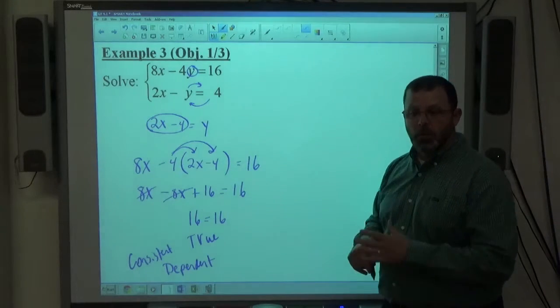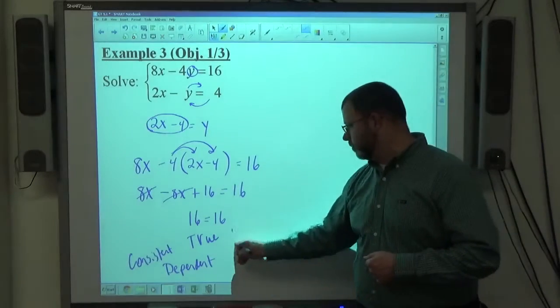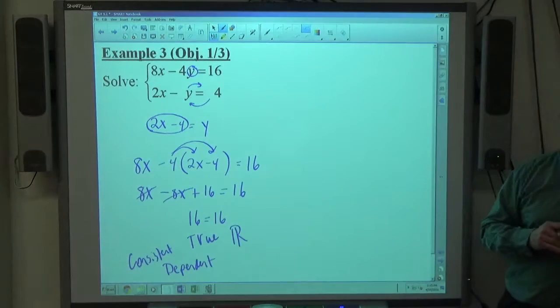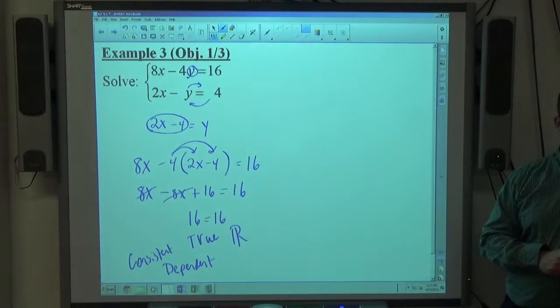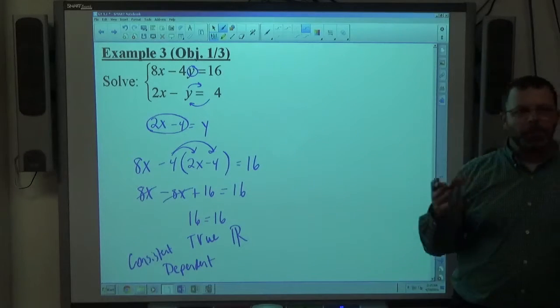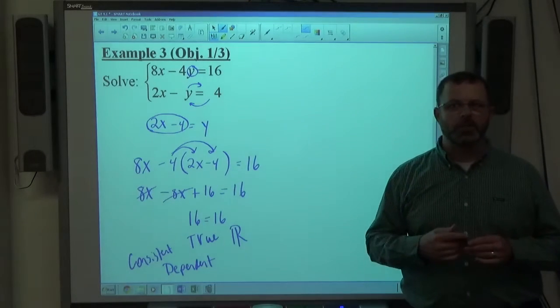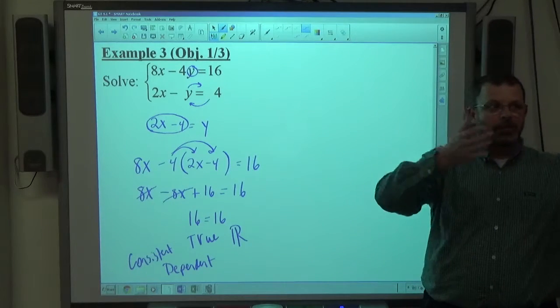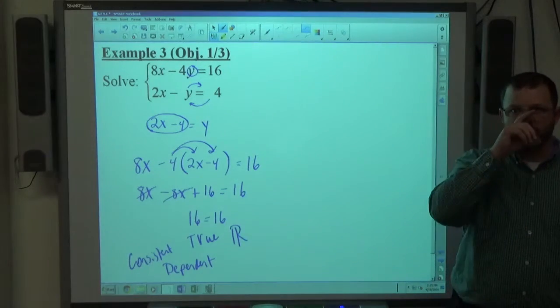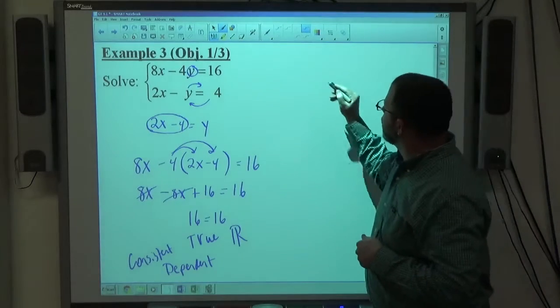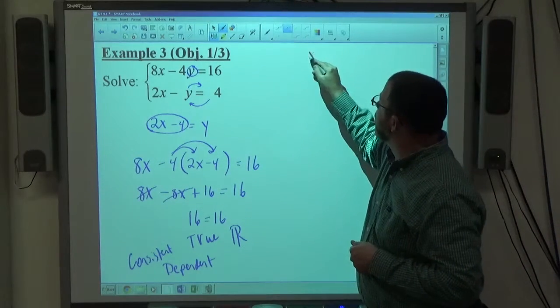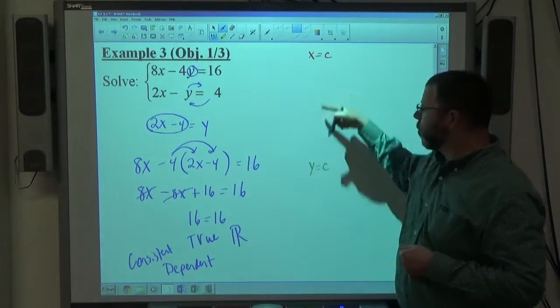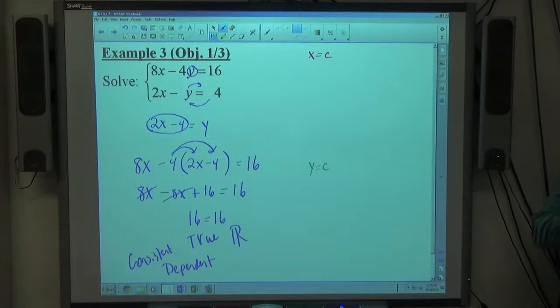What we did back in algebra 2 when we saw these scenarios, we wrote a big all real numbers and circled that, and that was our final answer. What I want you to do in this class is a little bit more challenging, but not much. I want you to create an ordered pair that represents the structure of correct answers. There's an x, y ordered pair, but there's infinity x's matched with infinity y's that have a specific structure. The way you do this is real simple: you go with one of these two possibilities, either x equals c or y equals c, one or the other, not both.